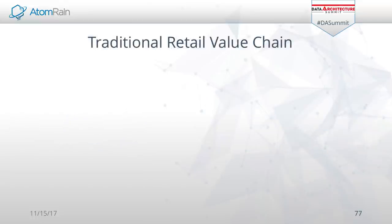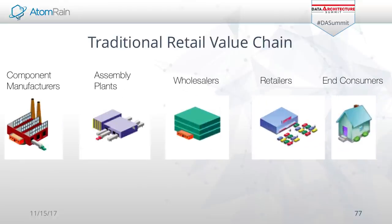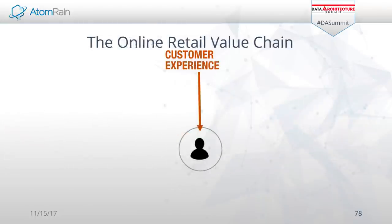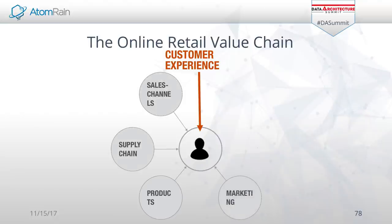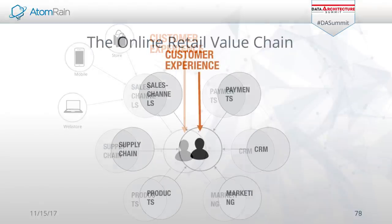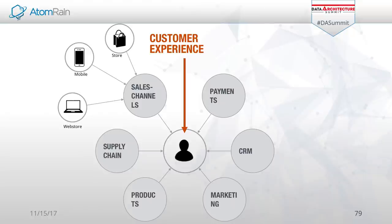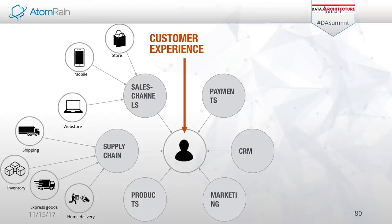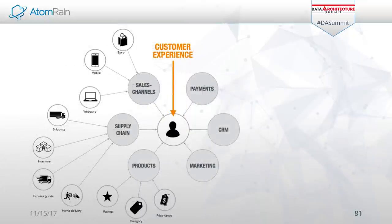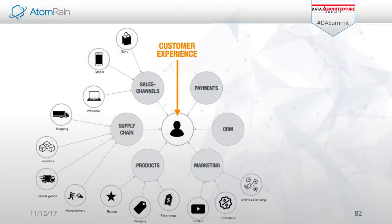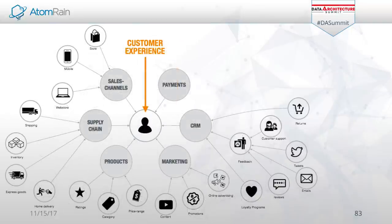We're going to focus in on retail. Your traditional value chain is very linear, but the online retail value chain or the connected customer is really about all of these different aspects: from your sales channel to supply chain to products, marketing, CRM — all of this ties together and it's connected. From your web store to customer touch points to shipping, inventory, express goods, home delivery, to products, prices, discounts, savings, categories, your marketing channels, promotions, online marketing, all your touch points, CRM, feedback received from the customer, customer support, returns, tweets, all the social media.